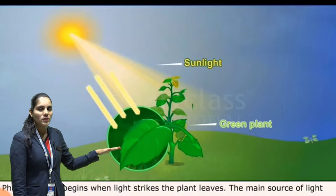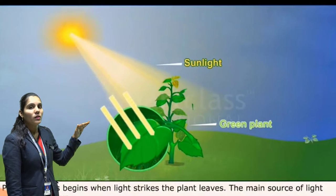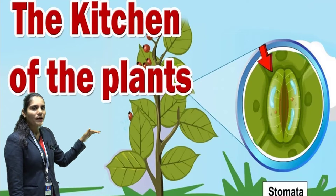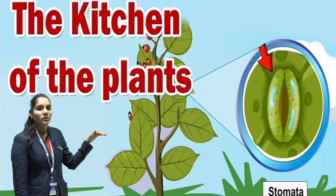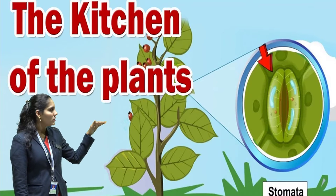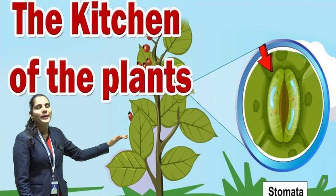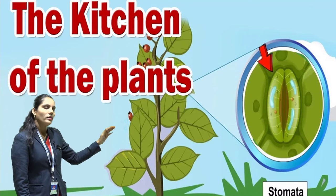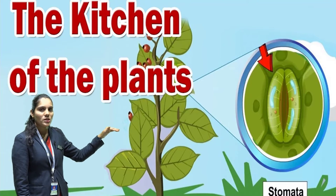This photosynthesis process takes place in the leaf only. That is why the leaf of the plant is known as the kitchen and the food factory, because in the food factory all the molecules get combined, they form the food, and they release oxygen in this process.